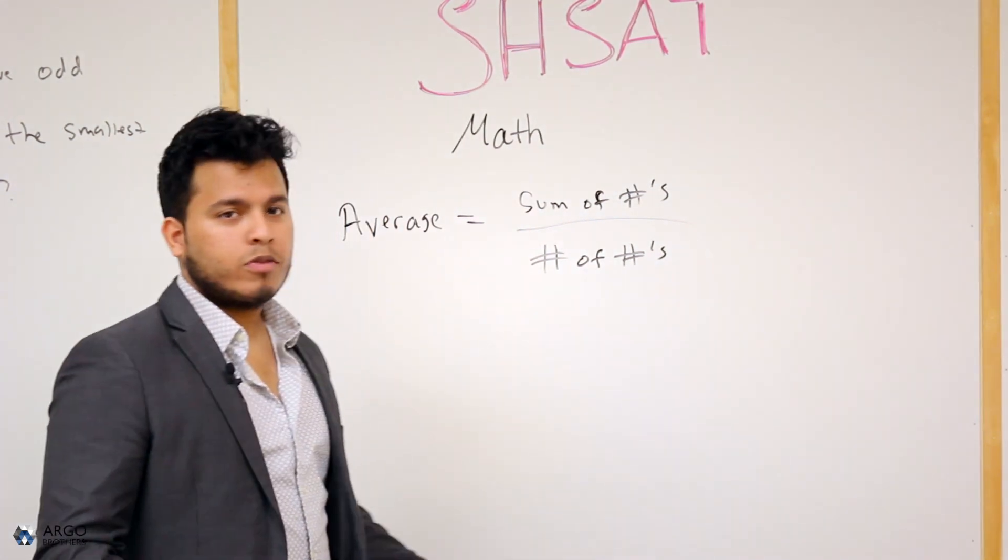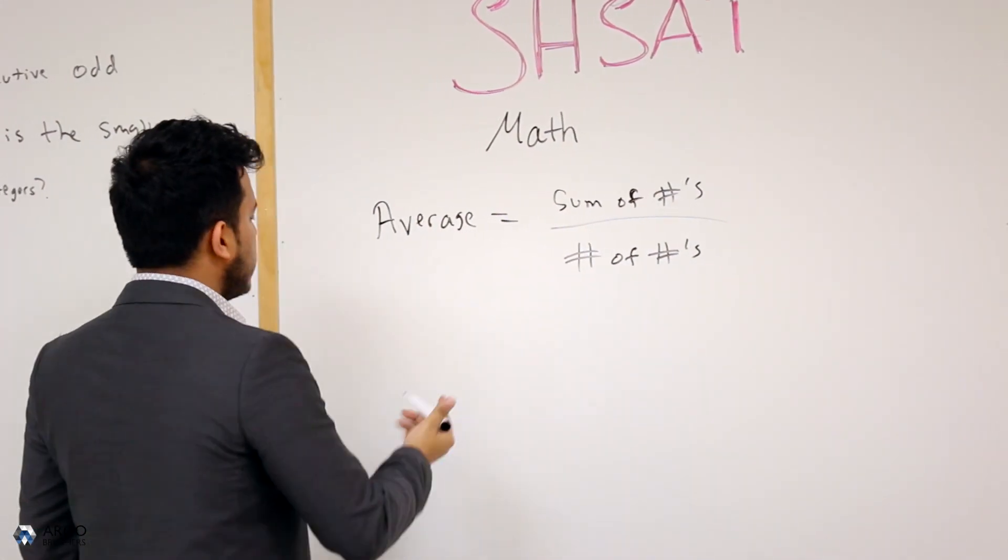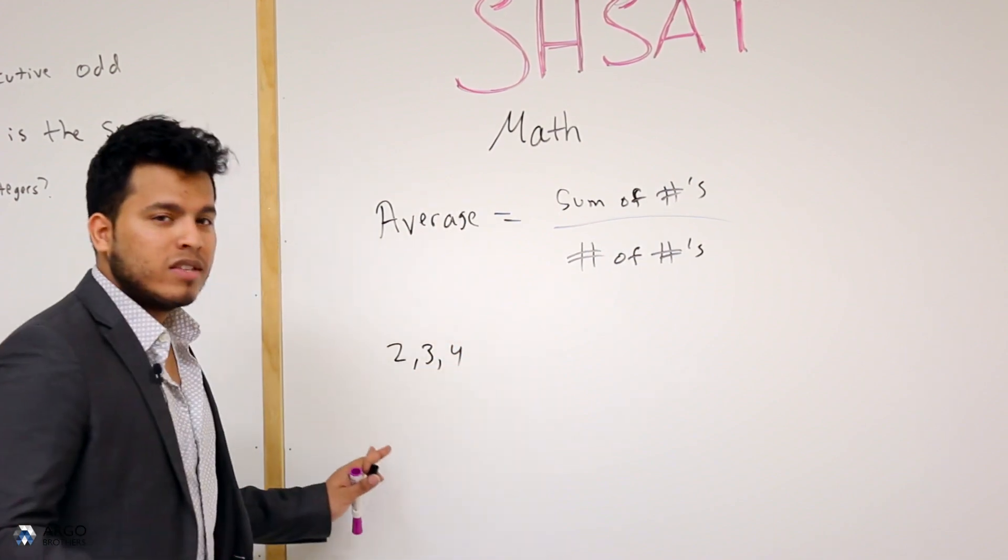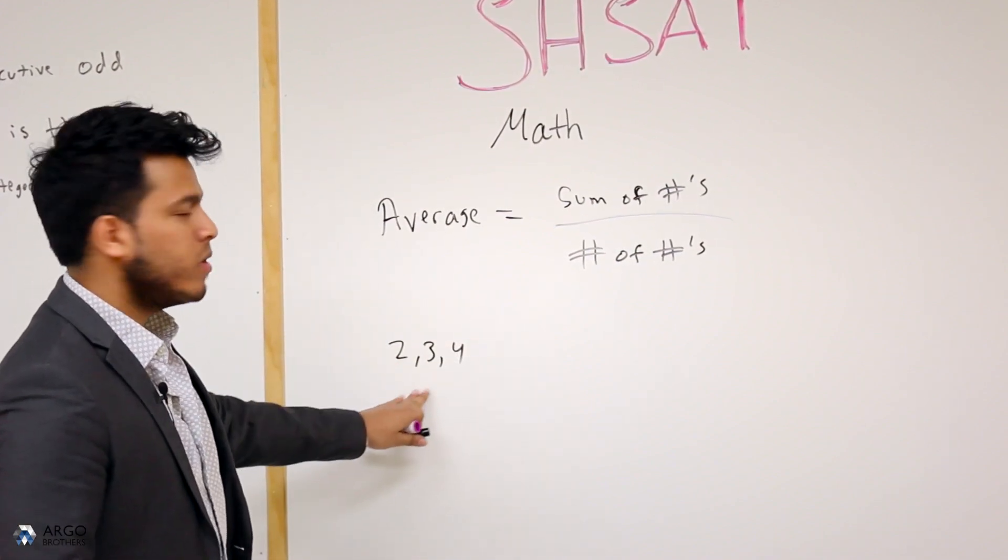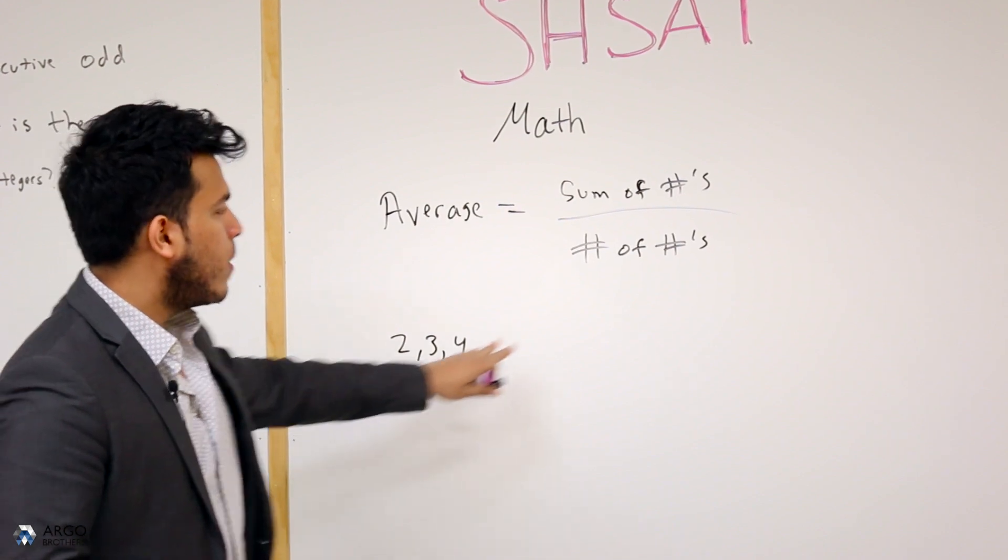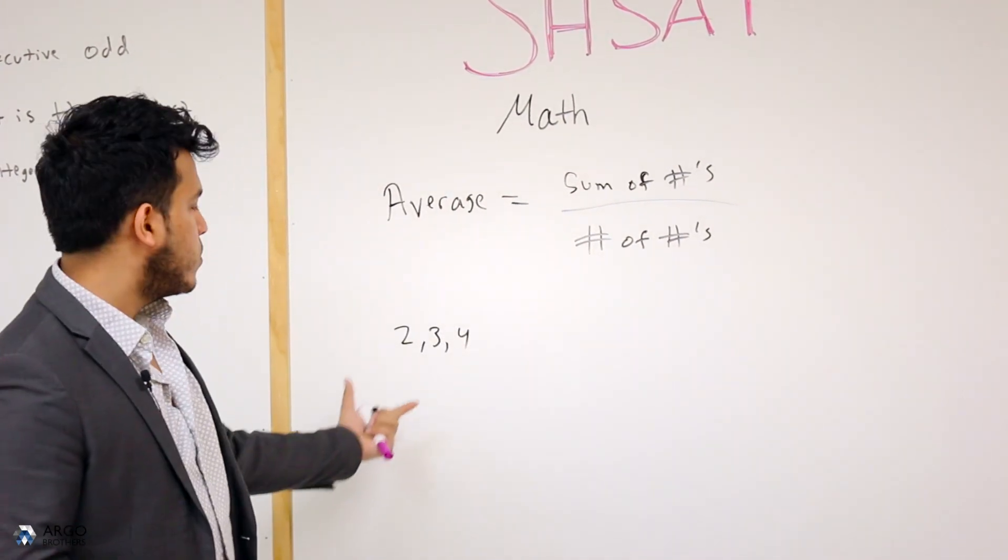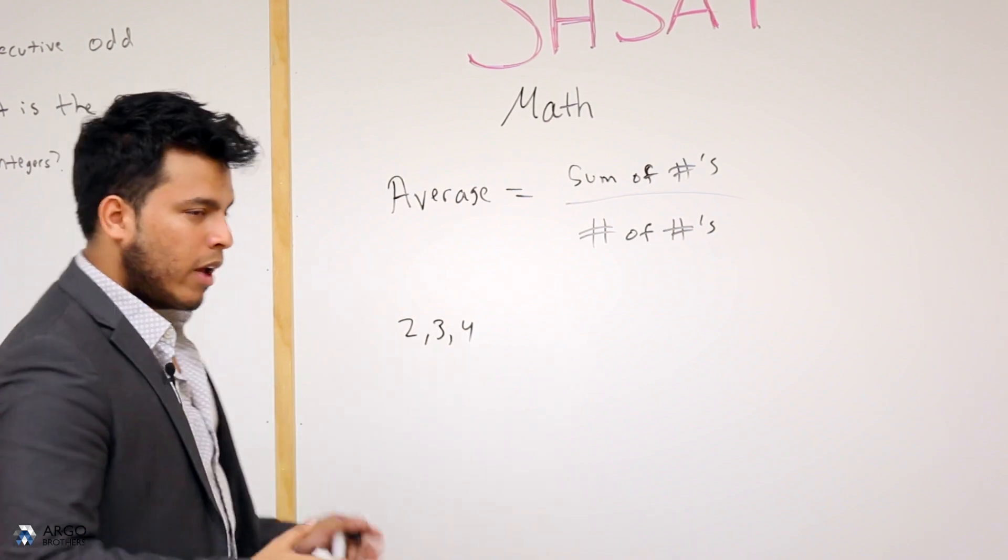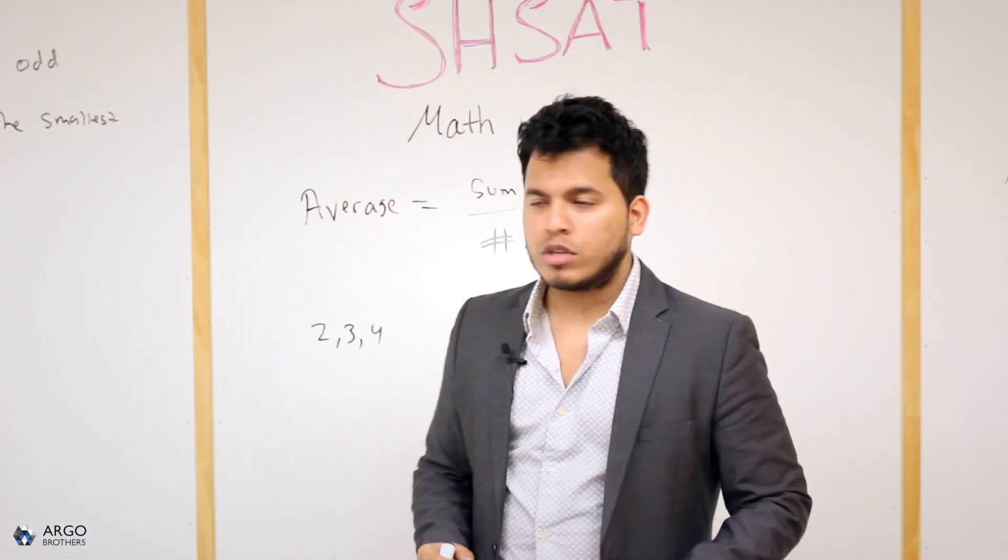So once again, for most people you already know this. So if I give you a list and I say 2, 3, and 4, what is the average? You take the sum of numbers, 4 plus 3 plus 2, divided by the number of numbers, so the amount of numbers. So I divide that by 3, and that's the average. So I don't think that most of you have difficulty with finding the average.